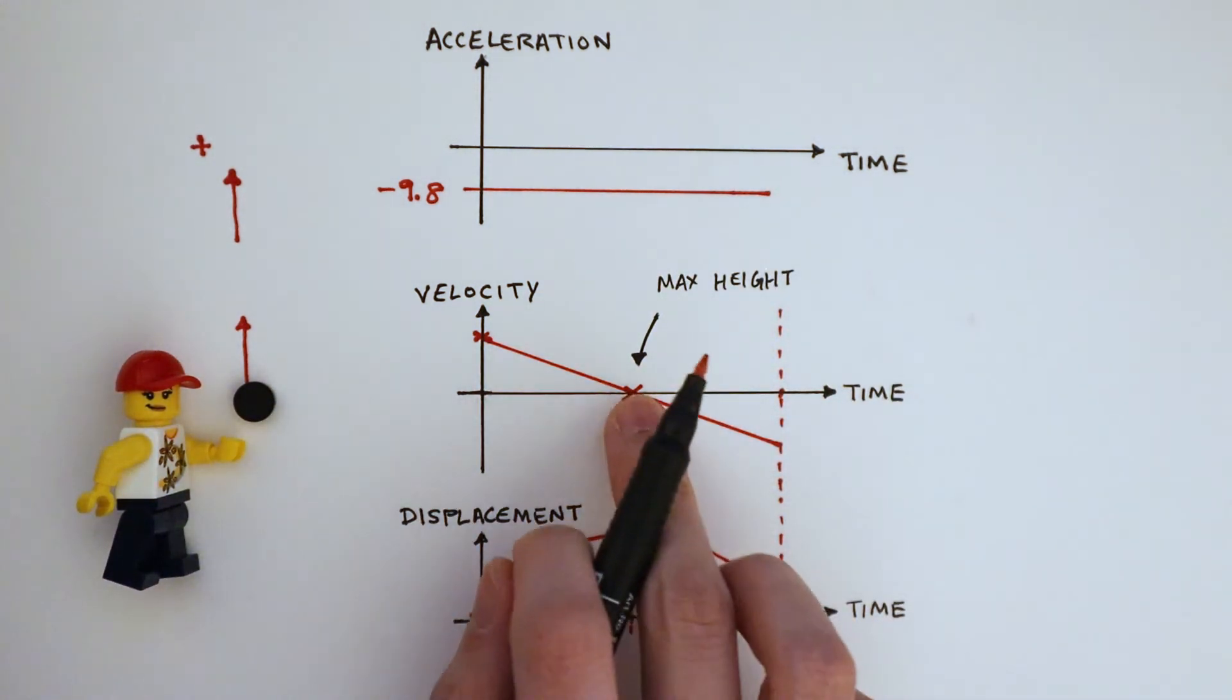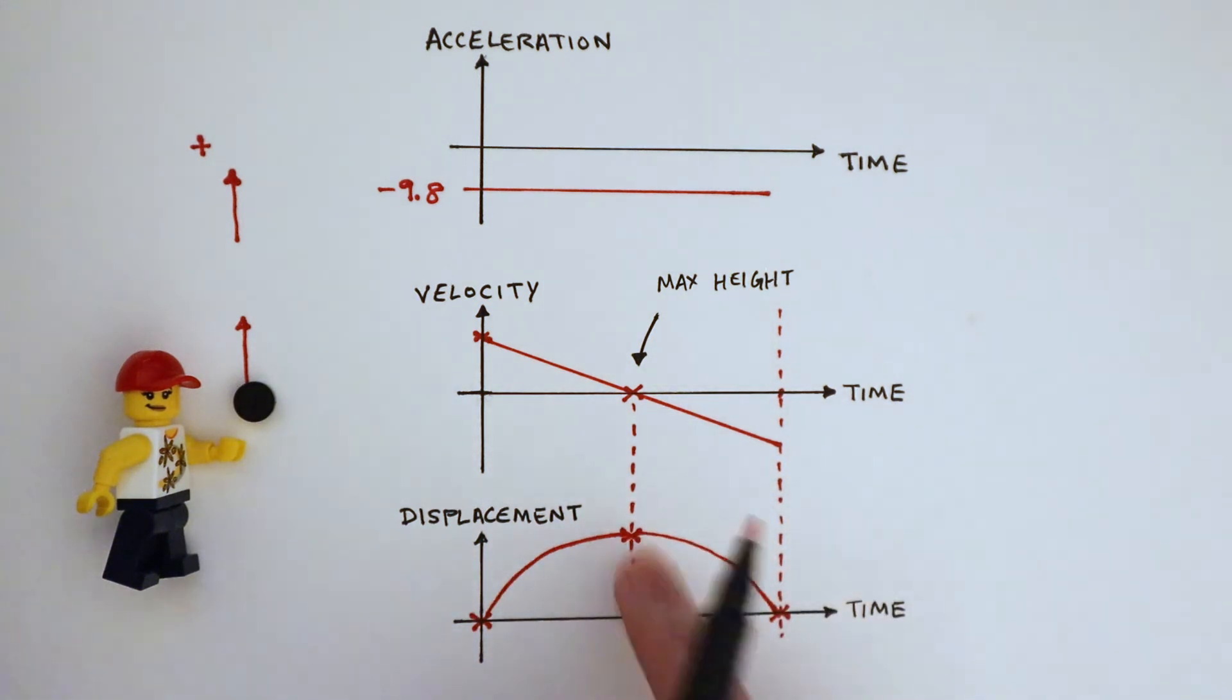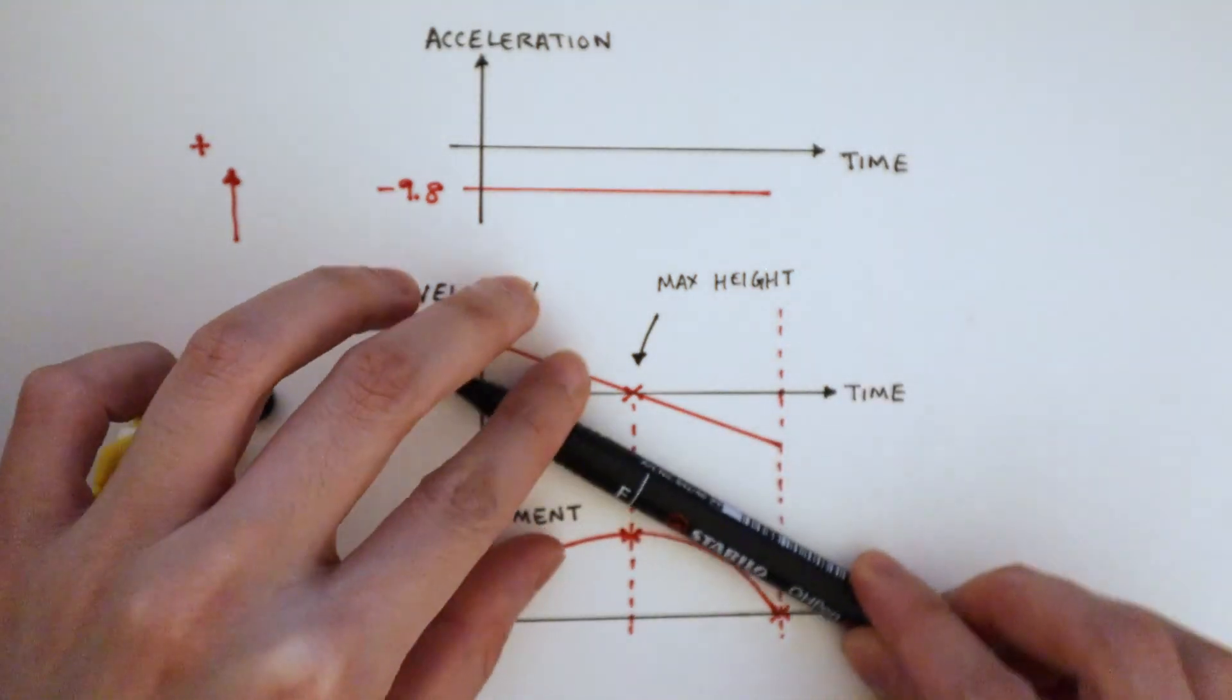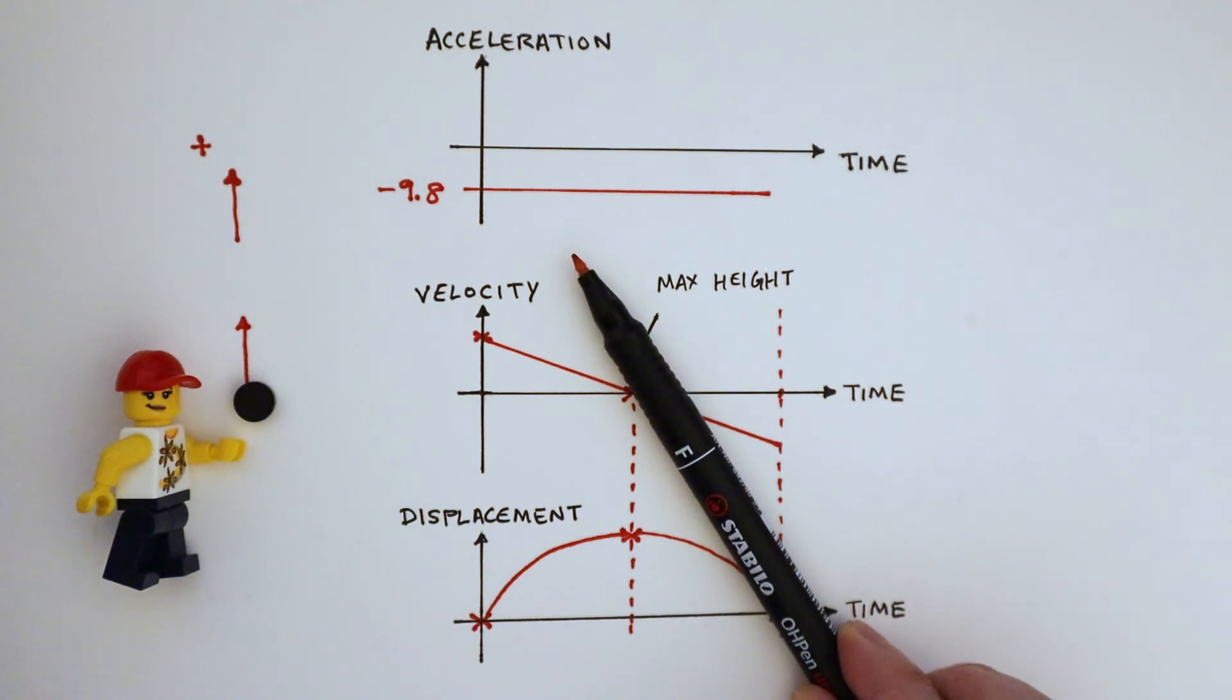On this side of the graph, velocity is getting bigger in magnitude, so the gradients is getting steeper, but in the negative direction.